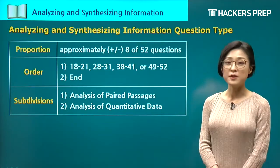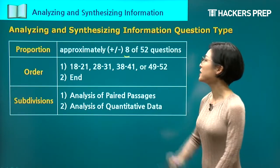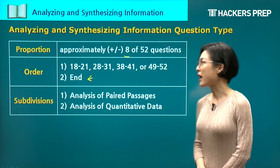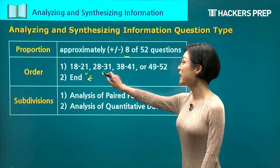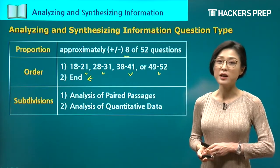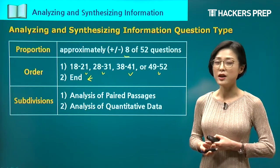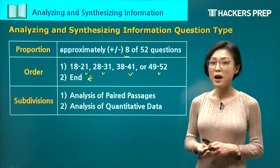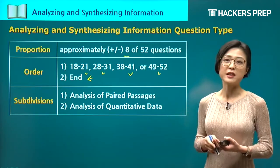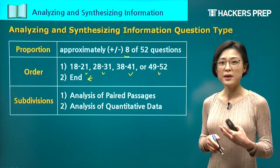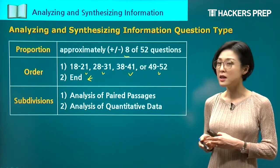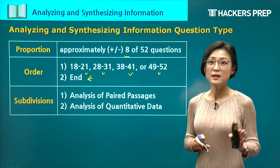The analyzing and synthesizing information questions make up approximately 8 of 52 questions on your reading section. They will always come at the end of each test set — questions 18 to 21, 28 to 31, 38 to 41, or 49 to 52. We will have one literary passage, two passages from social sciences, and two from the sciences. Because this question type involves synthesizing quantitative data, the literary passage will be excluded. Expect either social science or science passages.